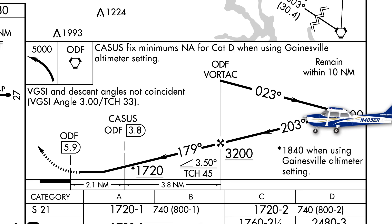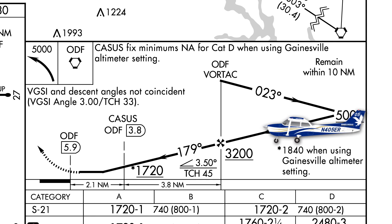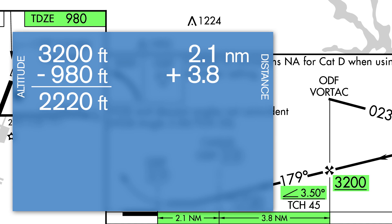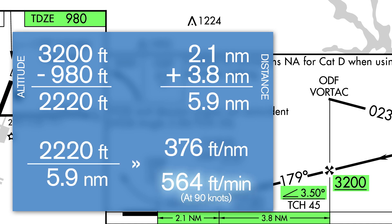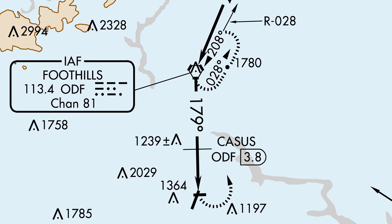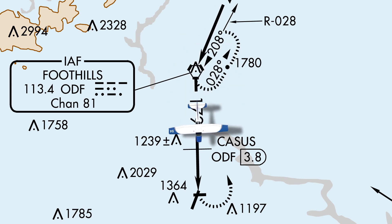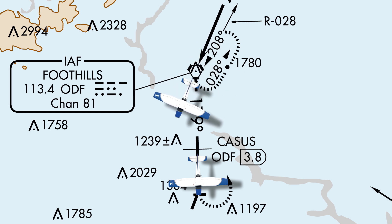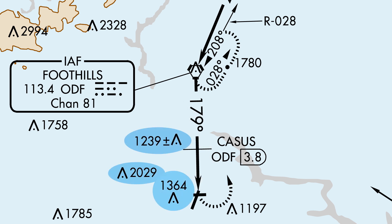Once established on the inbound course, begin a descent down to 3,200 feet MSL as specified on the profile view. For this approach, we can use a stabilized rate of descent of about 550 feet per minute after crossing the final approach fix. One thing to note about this approach is that there is a radial change at the final approach fix, so be sure to turn to the left and then track the 179-degree radial outbound when crossing over the VOR. Failure to change the CDI from 203 to 179 will result in never reaching the proper angle to land on the runway and could lead to a collision with other traffic or even obstacles in the vicinity of the approach area.